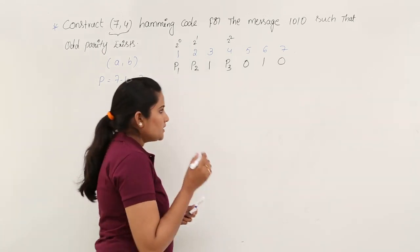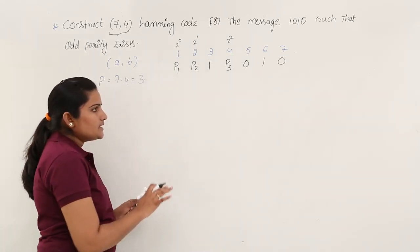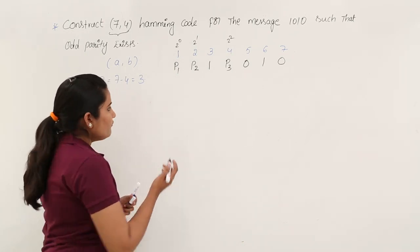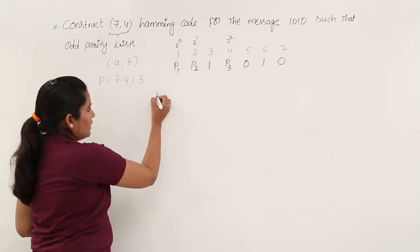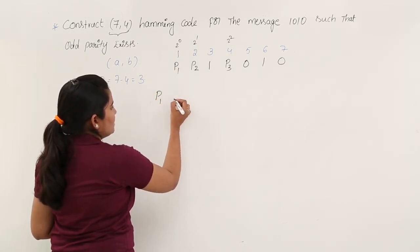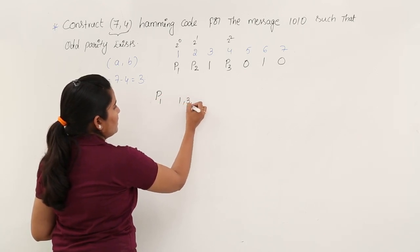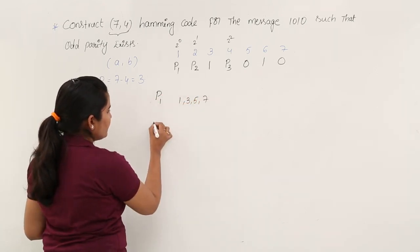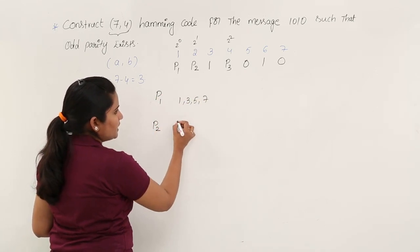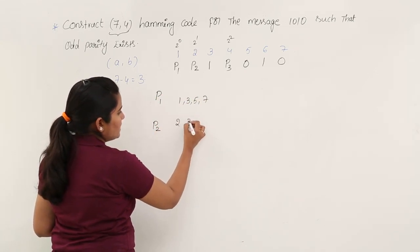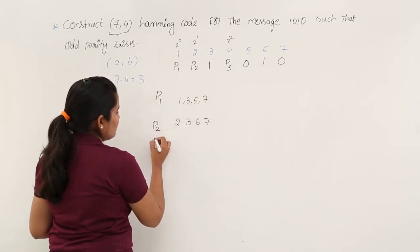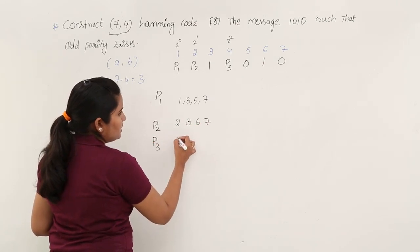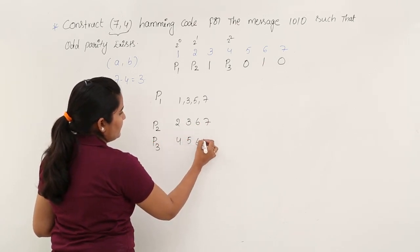The parity bits must satisfy odd parity. For P1 you need to check positions 1, 3, 5, 7. For P2 you need to check positions 2, 3, 6, 7. For P3 you need to check positions 4, 5, 6, 7.